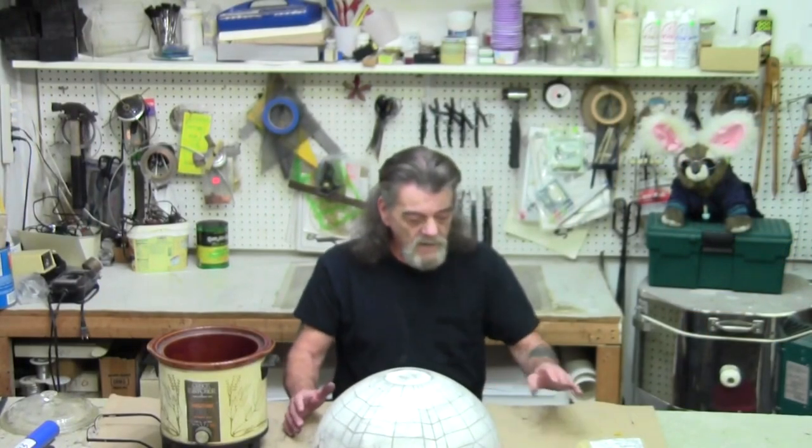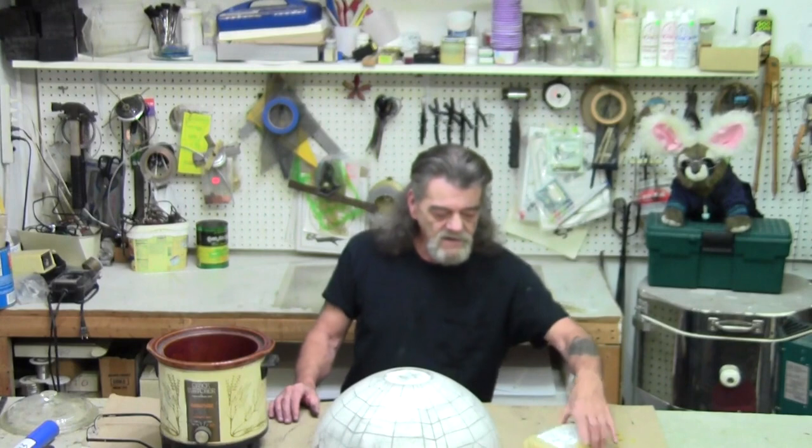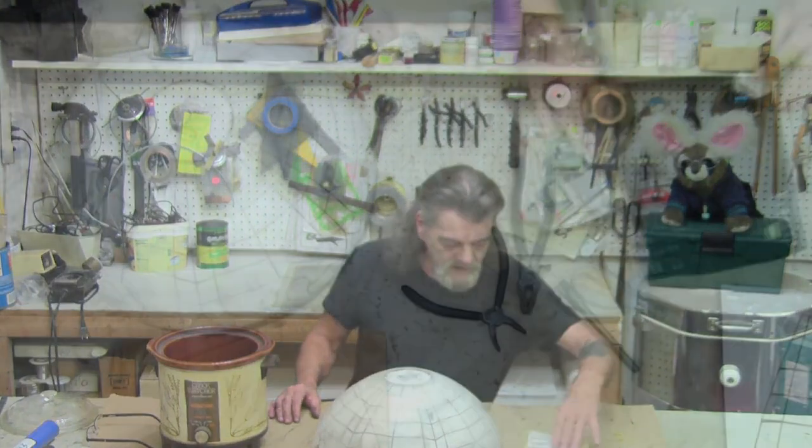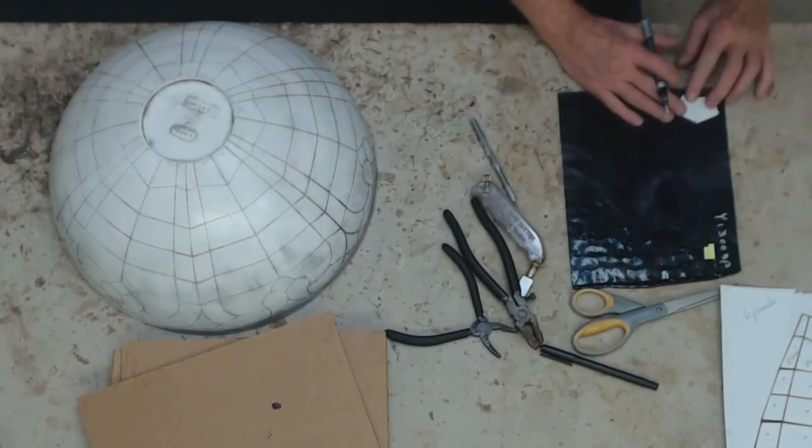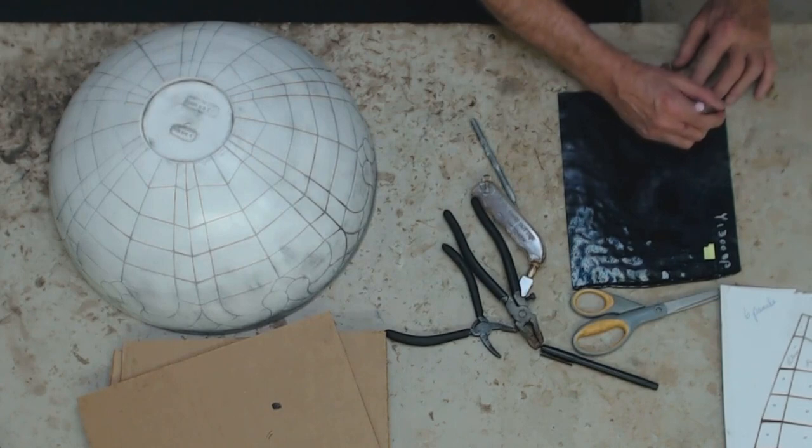We're going to be putting this together with tacky wax. When you buy tacky wax, it comes in a big hard block like this. I'm going to start tracing and number the glass after I trace the pattern.